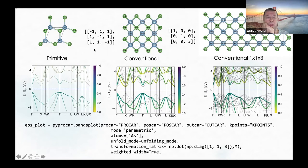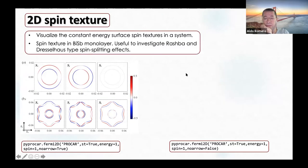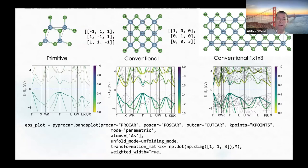In this particular case, I think it's aluminum arsenide—I'm comparing the contribution of the arsenic, where the colors are only assigned to that species. There are a lot of options available here, and that's something new happening in PyProCAR.